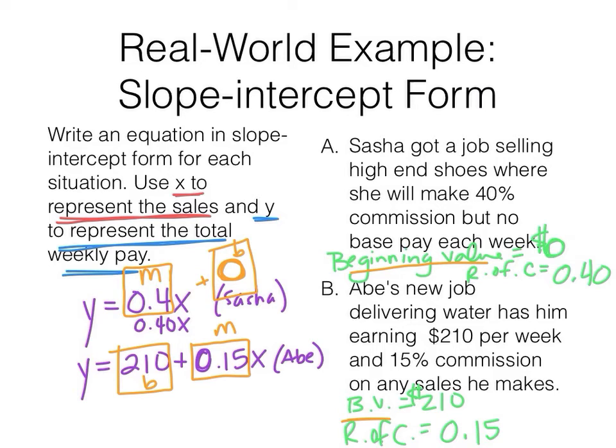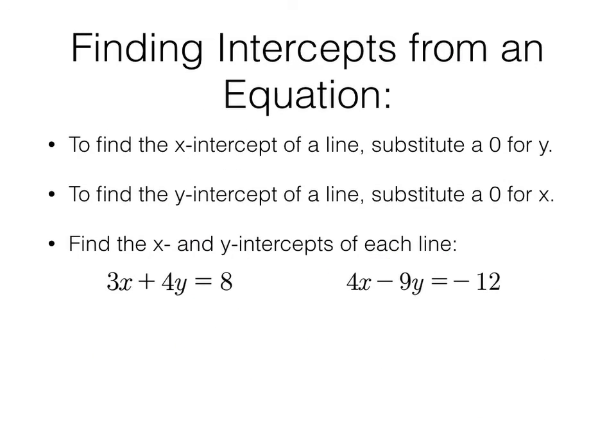The last thing I want to do in this video is we're going to find the intercept of a line from an equation. To find the x-intercept of a line, you're going to substitute a zero for the y-coordinate.